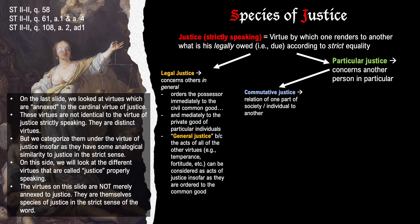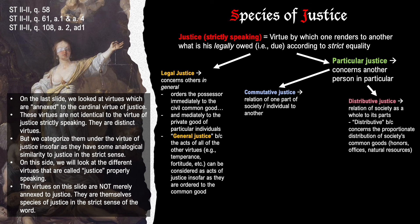Particular justice is subdivided into commutative justice and distributive justice. Commutative justice concerns the relation of one part of society or an individual to another individual or another part of society. Distributive justice concerns the relation of society as a whole to its parts. It is called distributive because it concerns the proportionate distribution of society's common goods, such as honors, offices, and natural resources.